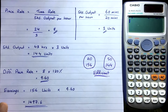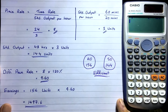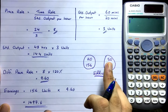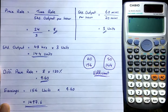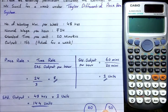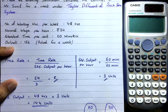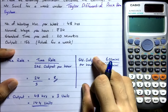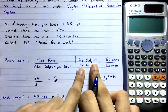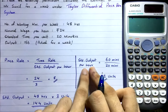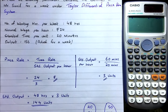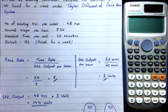To summarize the approach for Taylor's system: if the piece rate isn't given, calculate it as Time Rate ÷ Standard Output per Hour. If standard output per hour isn't given but standard time is, use 60 ÷ Standard Time per Unit. Then multiply standard output per hour by total working hours to get total standard output. Compare actual output to standard output to determine efficiency, then apply 120% or 80% of piece rate accordingly.